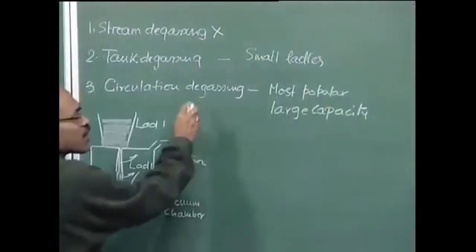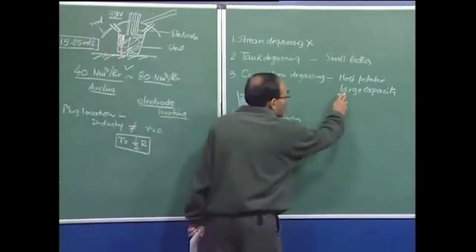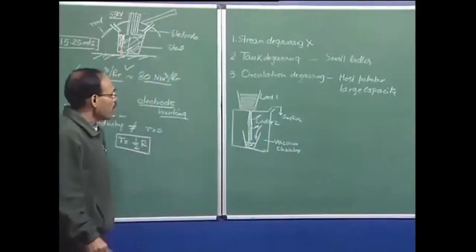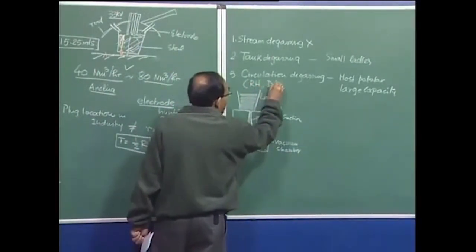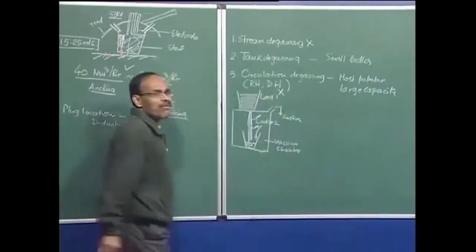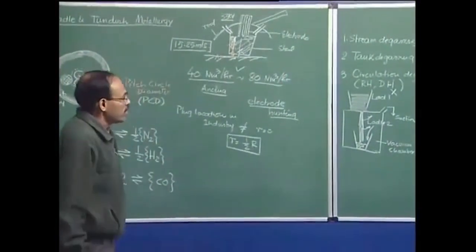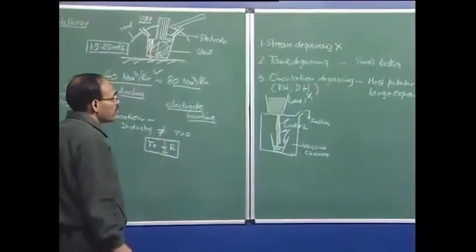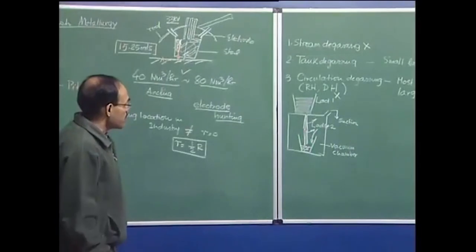The capital investment in circulation degassing is very heavy. Circulation degassing has two types: RH and DH. DH circulation degassing has become virtually obsolete today. It is the RH degassing process which is universally applied — some versions of RH degassing are available — and RH degassing is being applied in most large-capacity steel plants on a routine basis.